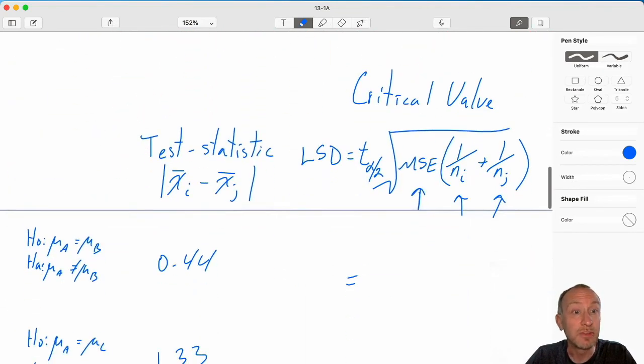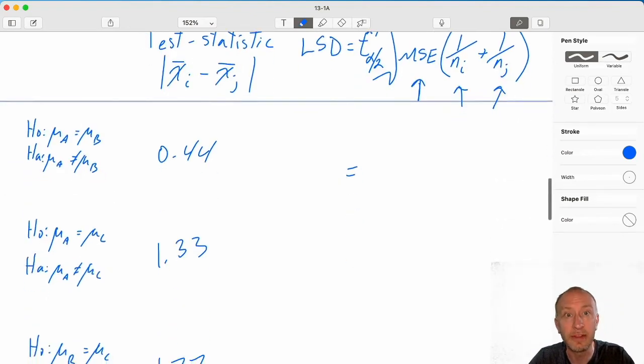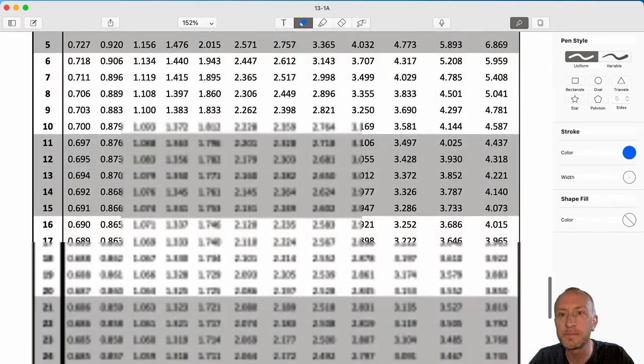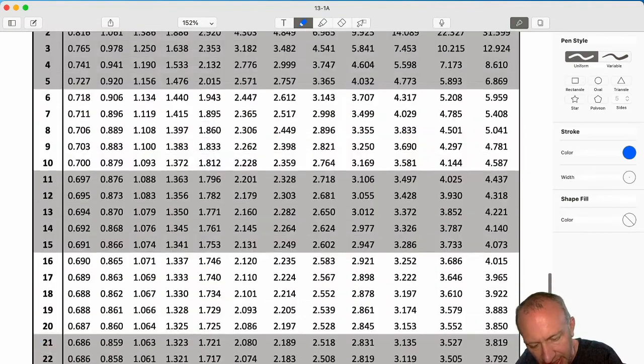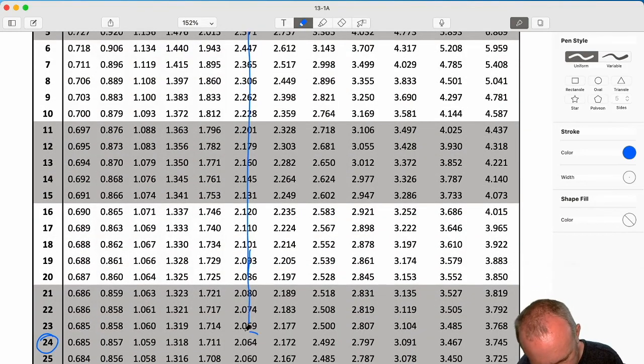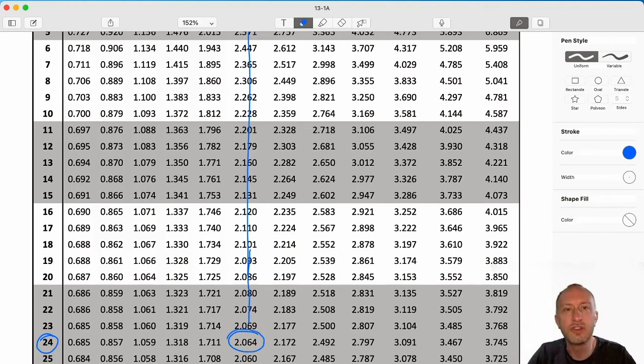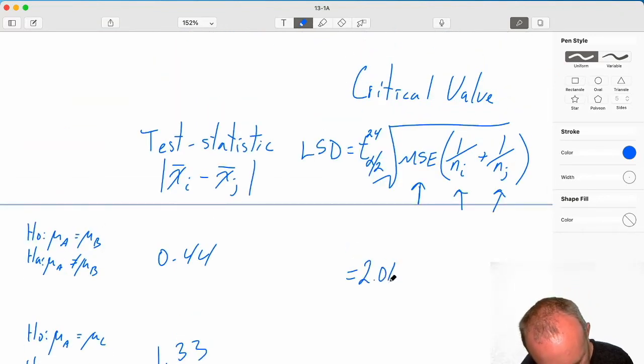So I'm going to go down to our t tables. Because I need to find that critical t for 24 degrees of freedom. Alpha divided by 2, let's use alpha 0.05 just to keep things familiar. So I'm going to come down to my t tables. And I'm looking for 24 degrees of freedom. Alpha divided by 2, 0.025. So where this comes down, here I see my critical value, 2.064. So I have there 2.064.